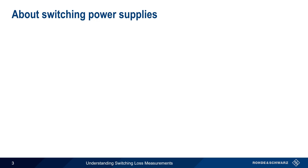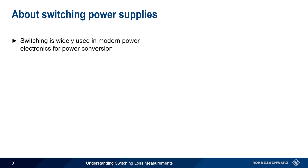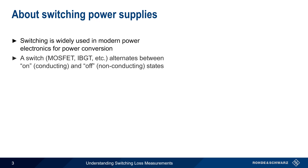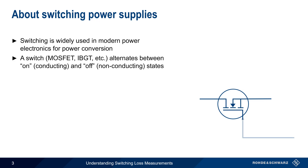As you should already know, switching is widely used in modern power electronics for power conversion — that is, for converting AC to DC, or converting one DC voltage level to another. A semiconductor switch, typically a MOSFET, IGBT, etc., alternates between the ON or conducting state and the OFF or non-conducting state, with the state usually controlled by an externally supplied pulse width modulated signal.